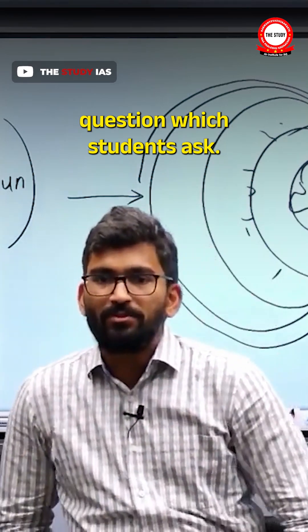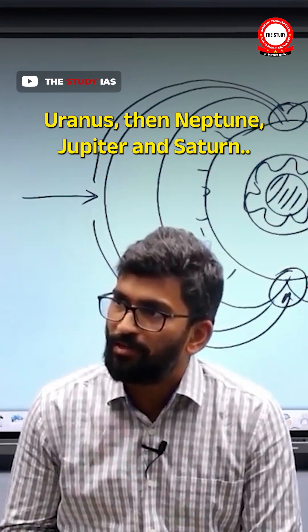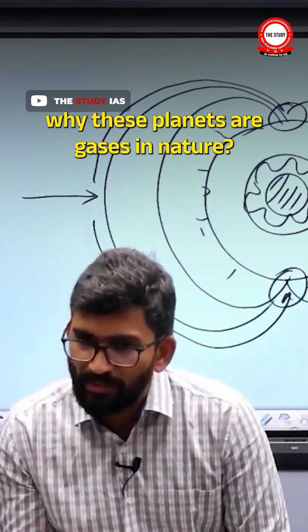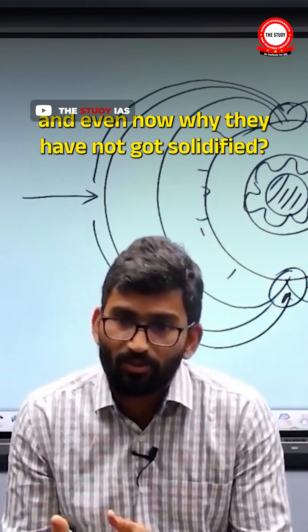I know this is a very common question which students ask. Uranus, then Neptune, Jupiter and Saturn. Why these planets are gases in nature even now? Why they have not got solidified?